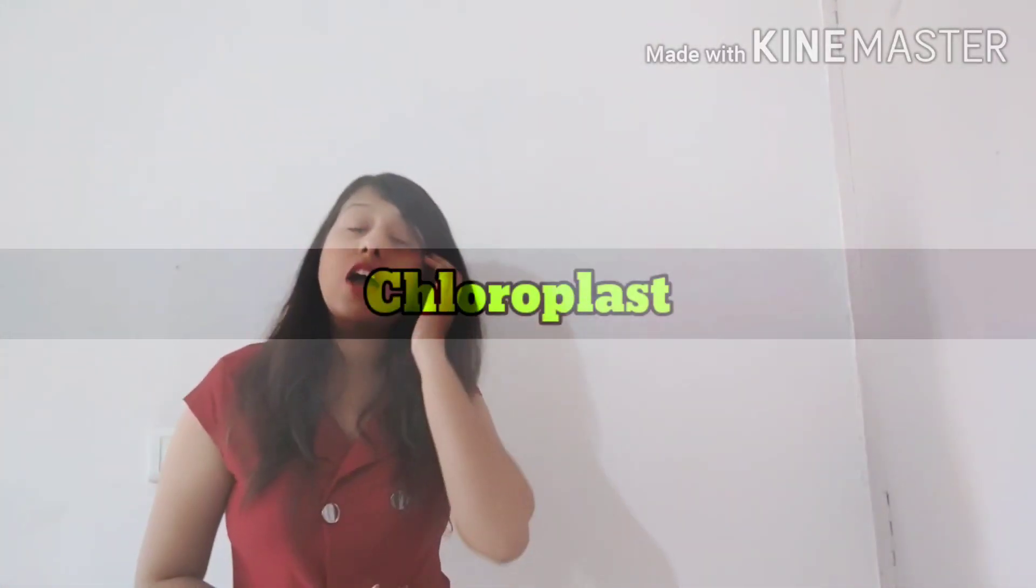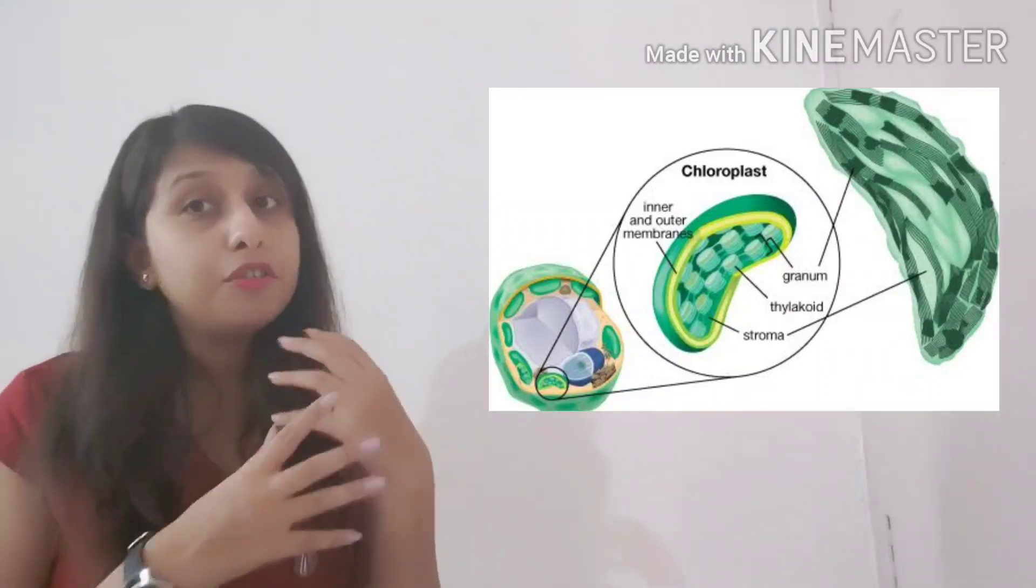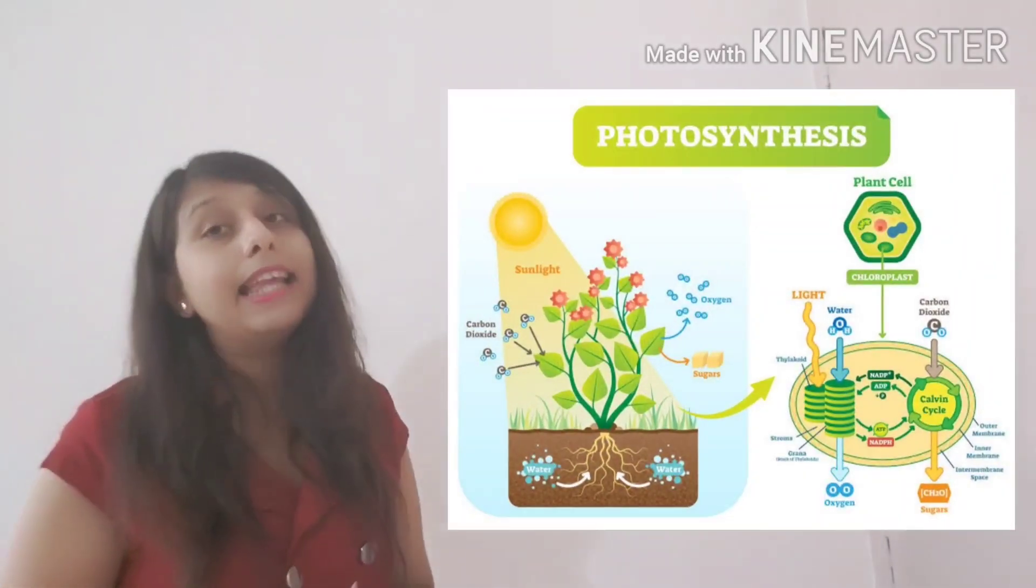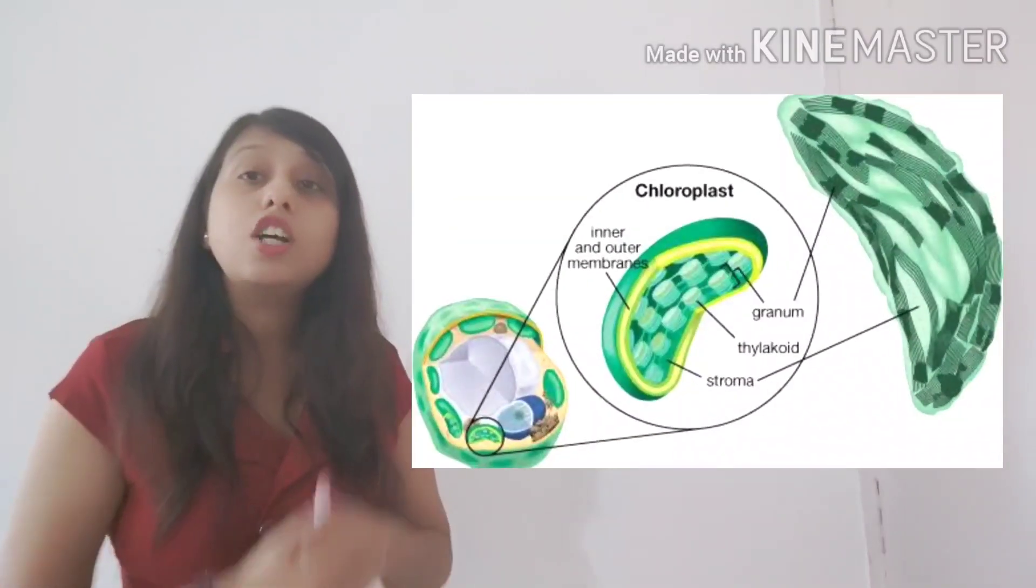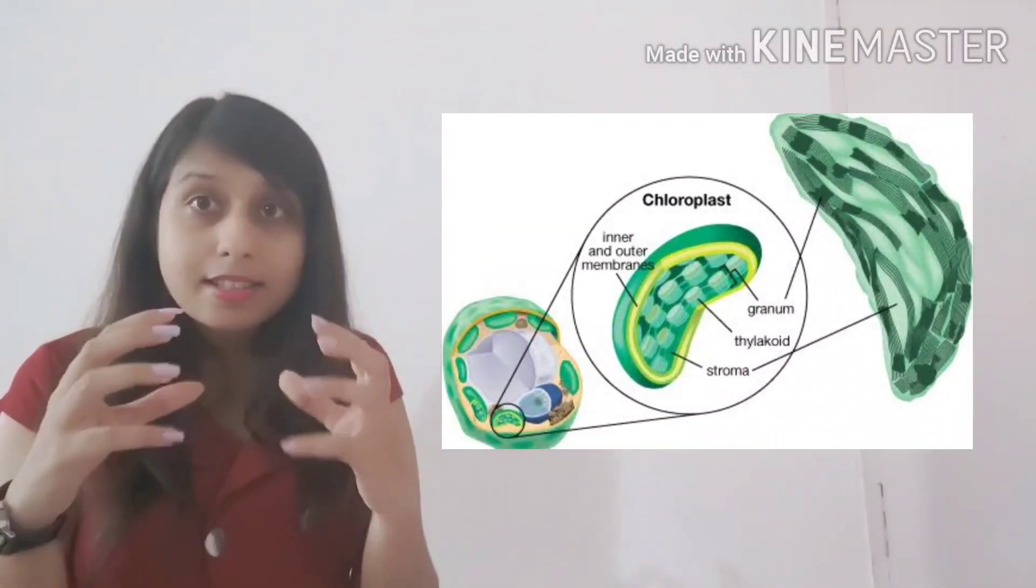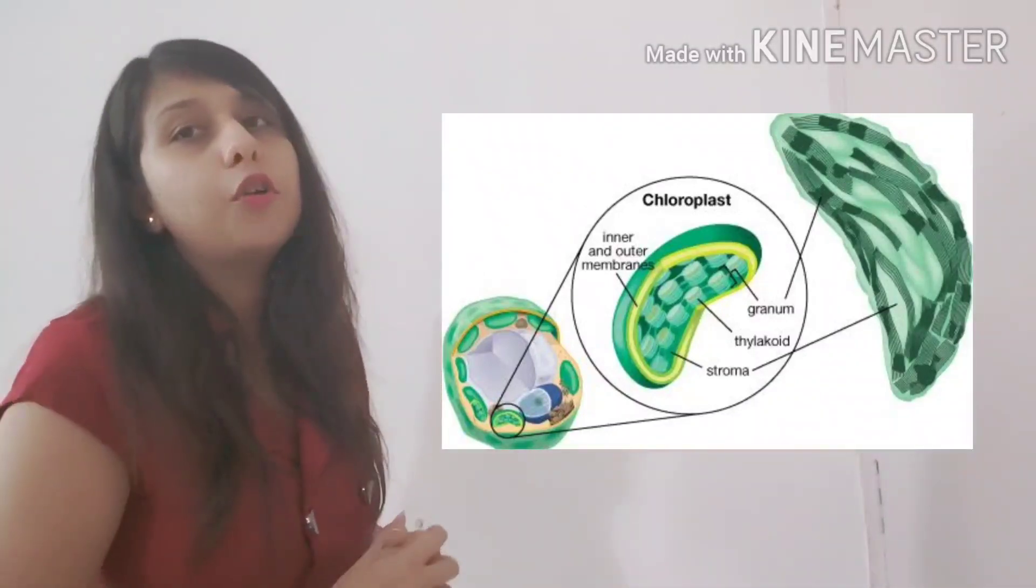Now next moving on to chloroplast. Chloroplasts are one very important organelle of a plant cell. I know that you all know that chloroplasts are only present in the plant cells. These chloroplasts are responsible for making the food. They synthesize the food through the process of photosynthesis. And they can do so because they contain green colored pigment that is the chlorophyll pigment through which this chlorophyll pigment actually can detect the light. And because of it, the photosynthesis occurs in them.